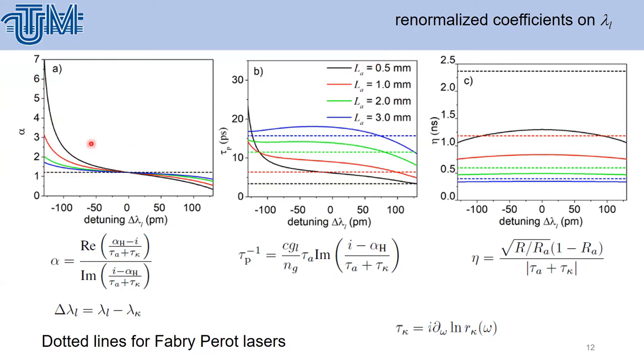It strongly depends on the negative detuning, which is shown here. The value goes from 1.2 up to 7.